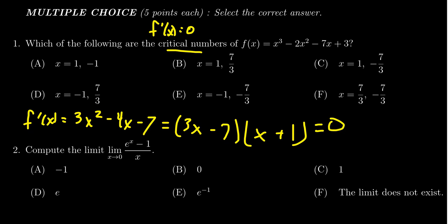And so by the zero product property, if 3x minus 7 equals 0, that means x equals 7 thirds. And if x plus 1 equals 0, that means x equals negative 1, for which then we see that the correct answer is d.